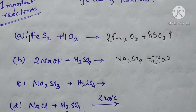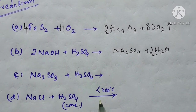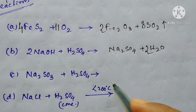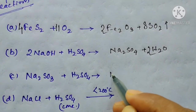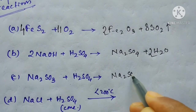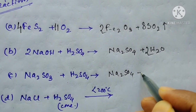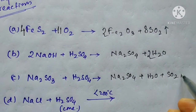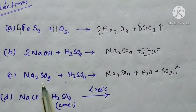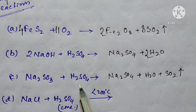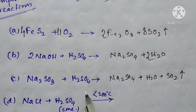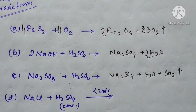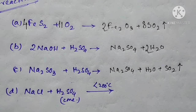The next question involves sodium sulfite and sulfuric acid. Sodium sulfite and sulfuric acid will produce sodium sulfate, water, and sulfur dioxide as gas. You can see that it is already a balanced reaction, so you don't need to balance anything else.